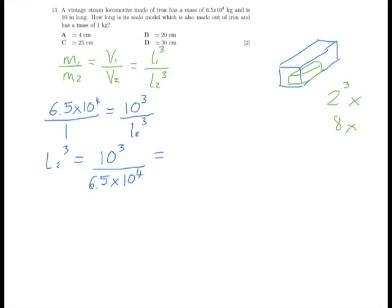Which we can simplify a little bit if we call that 10 to the 3 on the top and 65 times 10 to the 3 on the bottom. That means we can cancel our 10 to the 3s and be left with L2 cubed equals 1 over 65.